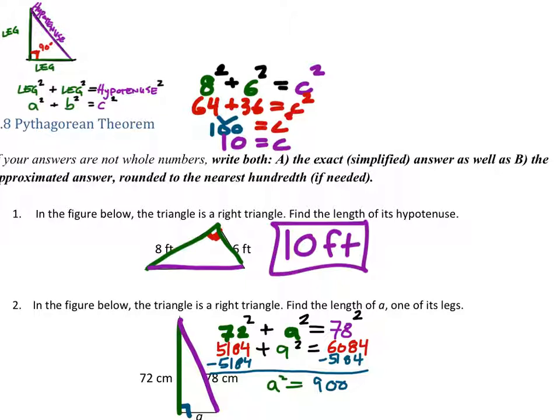So what two numbers multiply together to give us 900? So that would be A, and this is kind of like taking the square root of both sides of this thing.